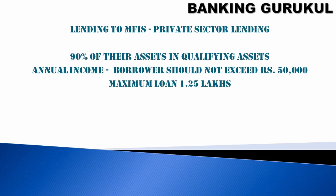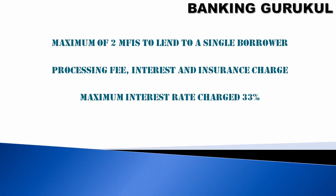For organizations lending to self-help groups or joint liability groups, 90% of their assets must be qualifying assets with no non-performing assets (NPAs). The borrower's annual income should not exceed ₹50,000. The maximum loan amount is ₹1.25 lakhs. A single borrower can take loans from a maximum of two microfinance institutions. While taking the loan, there will be processing fees, interest, and insurance charges.